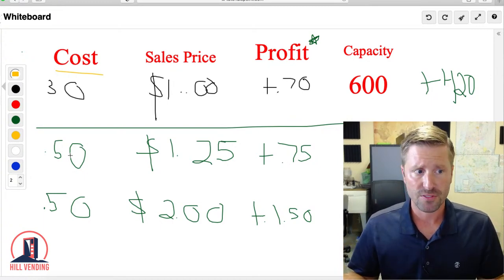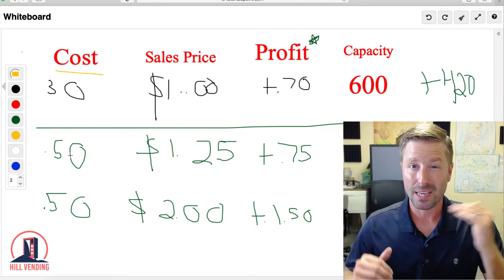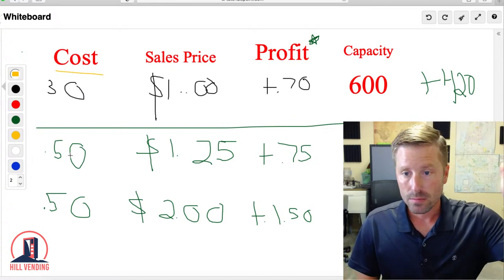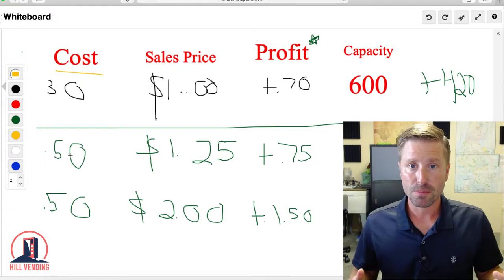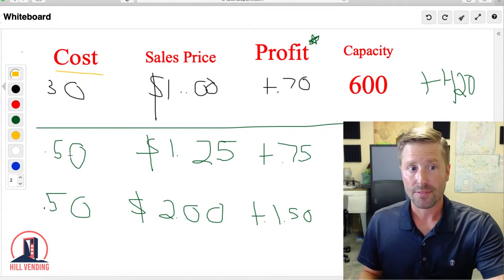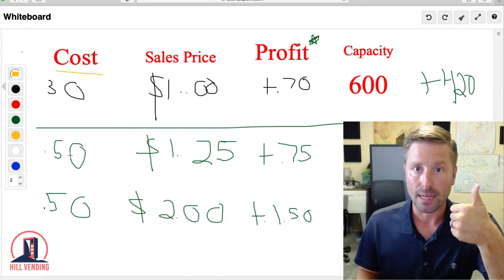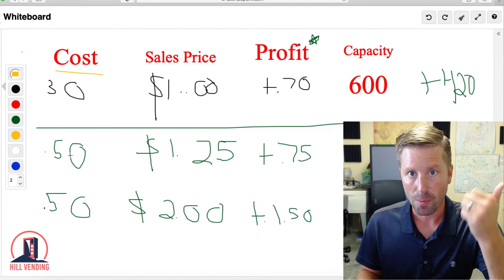Let's say your can in your area is 30 cents. The sales price is a dollar, making 70 cents per vend. Now let's say your drink machine holds 600 cans. That's $420 right. So if you're making 70 cents... Now I put an asterisk by profit because obviously there's sales tax that goes into it, there's repairs that go into it. There's other variables. It's not all profit, but for this simplistic example...